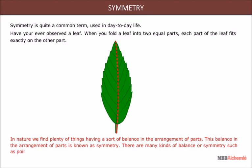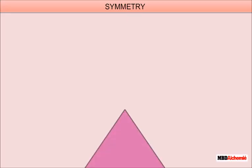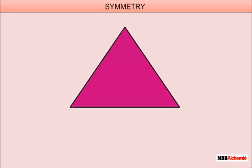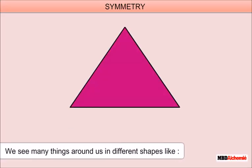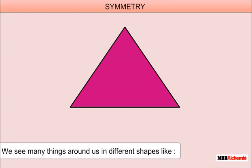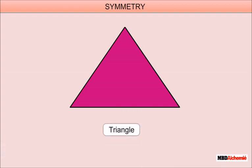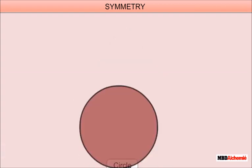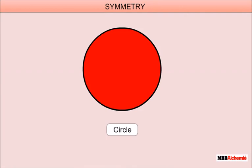There are many kinds of balances or symmetry, such as point symmetry, line symmetry, and plane symmetry. We see many things around us in different shapes, like triangle, circle, and so on.